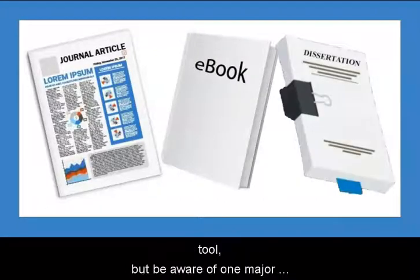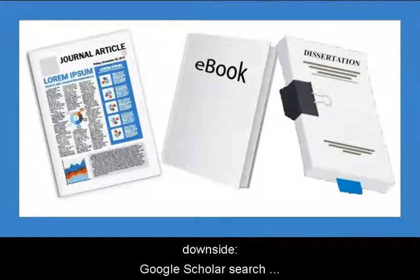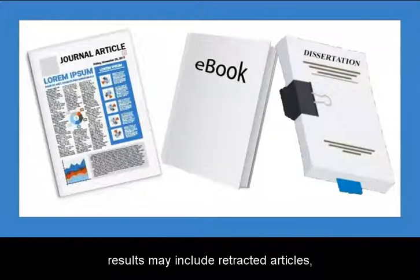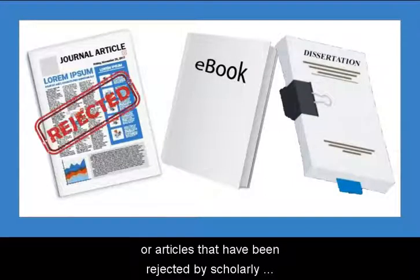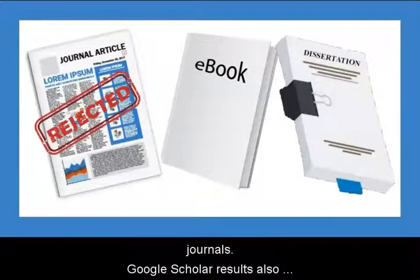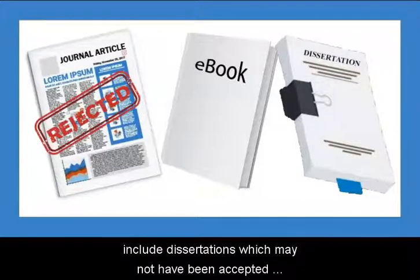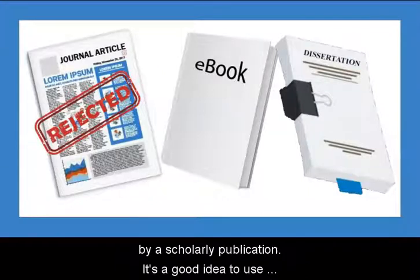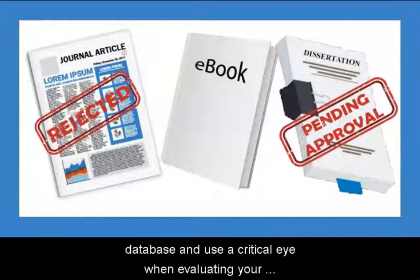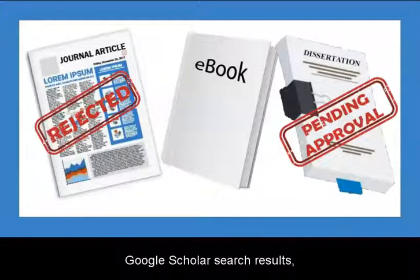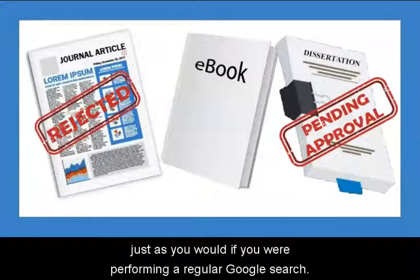It can be a great research tool, but be aware of one major downside. Google Scholar search results may include retracted articles or articles that have been rejected by scholarly journals. Google Scholar results also include dissertations which may not have been accepted by a scholarly publication yet. It's a good idea to use Google Scholar in conjunction with the library database and use a critical eye when evaluating your Google Scholar search results.